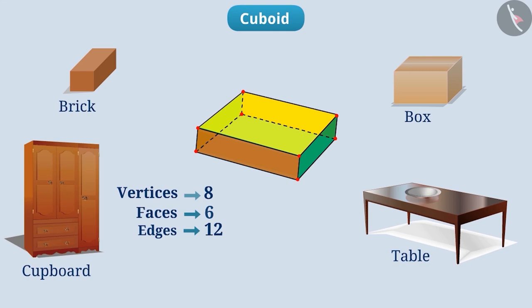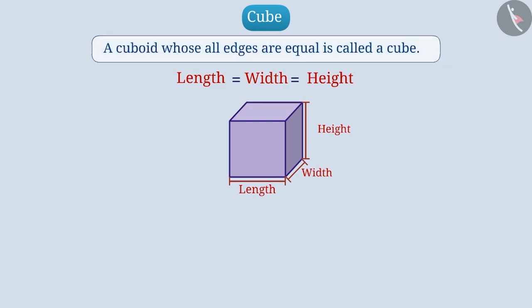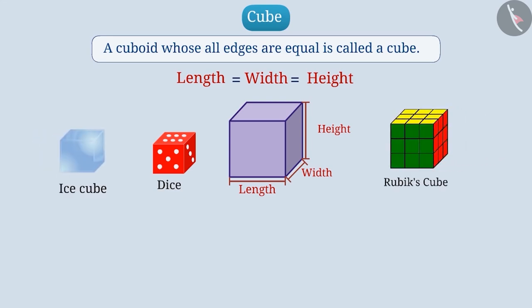Now, let us see what a cube is. If the length, width and height of a cuboid are equal, we get a cube. That is, a cuboid with all its sides equal is called a cube. For example, you must have used a dice to play. This is a cube. Similarly, we can see that rubik cube, ice cube, etc. are of cube shape. Like the cuboid, the cube has six faces, twelve edges and eight vertices.